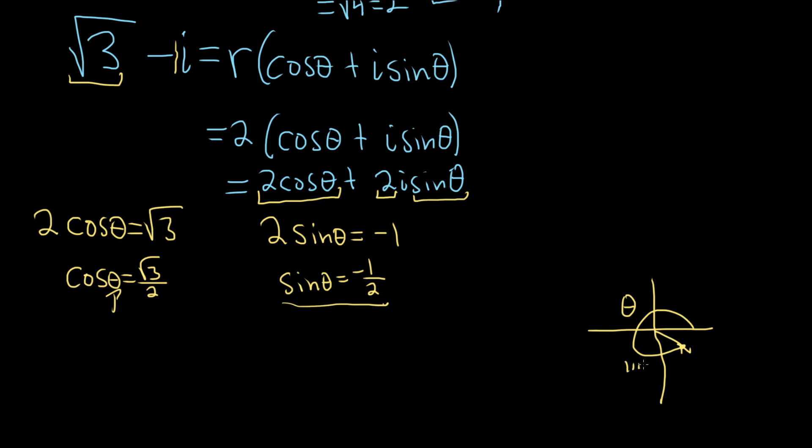Well, that would be 11 pi over 6. And the reason is this distance here is pi over 6, this angle here, because this is 2 pi, which is 12 pi over 6. So to get from 11 pi over 6 to 12 pi over 6, which is 2 pi, you add pi over 6. So the angle in this problem is 11 pi over 6.